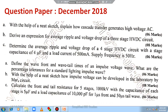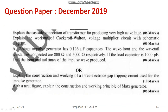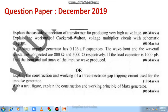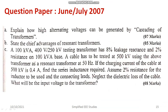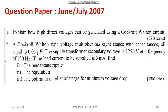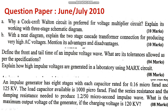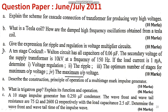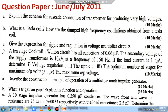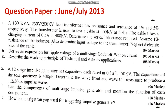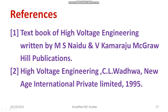You can also see different questions which have been repeated in the years 2018 and 2019. In the latest question paper you can see: explain the construction and working of the three-electrode gap tripping circuit used for the impulse generator. These are also questions which were repeated from as far back as 2007, 2008, 2010, and 2011. If you go through all these, you will definitely be able to crack the examination.